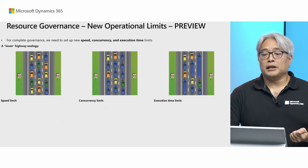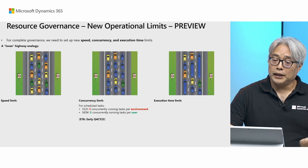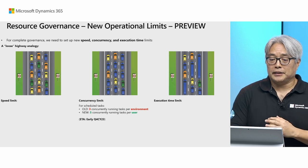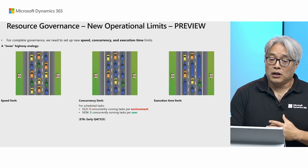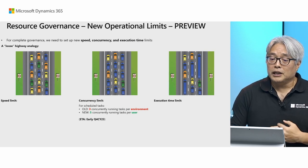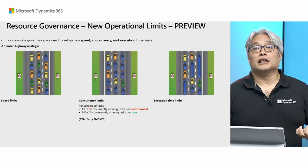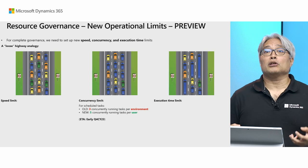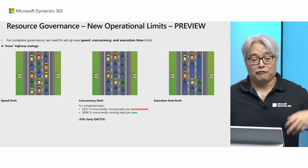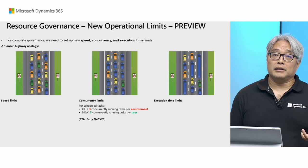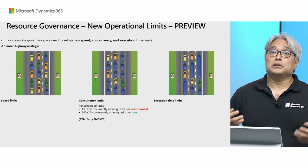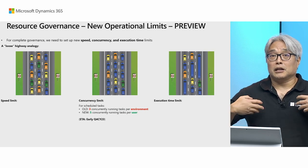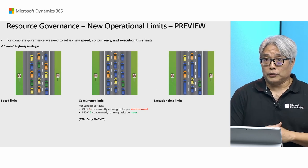The preview coming this next quarter: first, in the early part of next quarter, we will upgrade the old concurrency limit for scheduled tasks from three concurrently running tasks per environment to five concurrently running tasks per user. If you have more users in the environment, the throughput for your environment gets bigger. For example, with two users you can run 10 scheduled tasks in parallel, or with three users you can run 15 tasks in parallel. Previously you could only run three per environment — this is a huge increase in throughput.